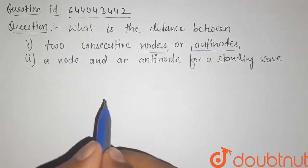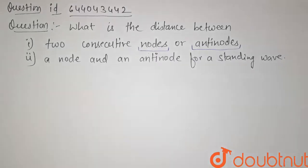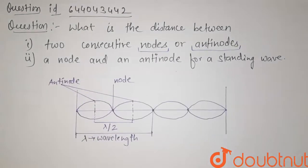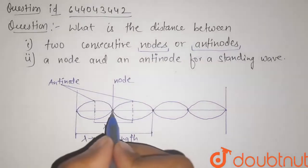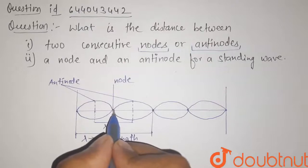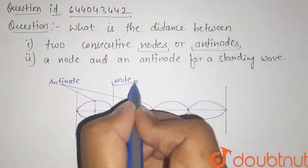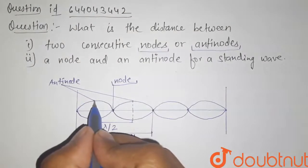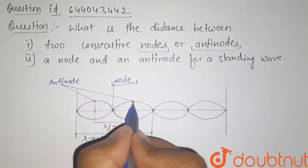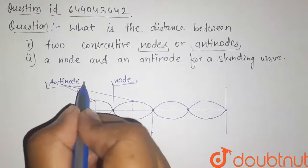So let me draw a figure for a standing wave. This is our standing wave which is a combination of two equal waves traveling in opposite direction. Now here we can see that this point where the displacement is zero is known as the node, and the point where the displacement is maximum is known as the antinode.